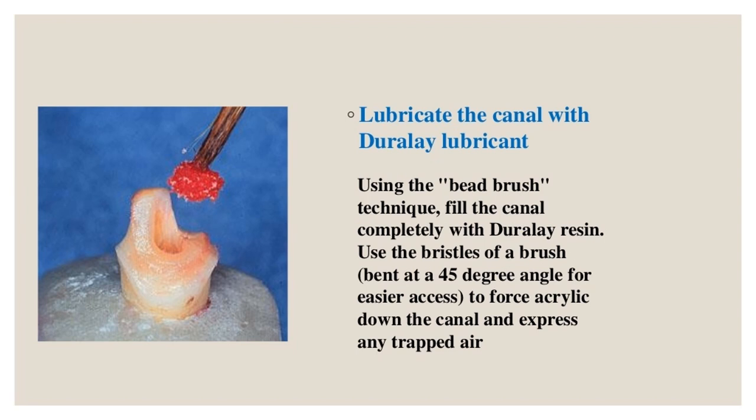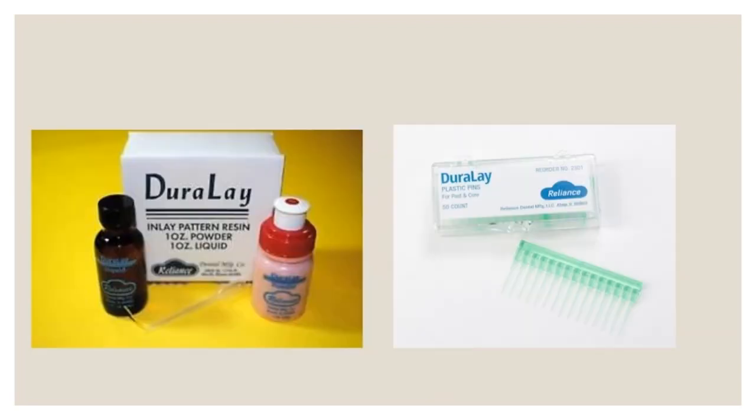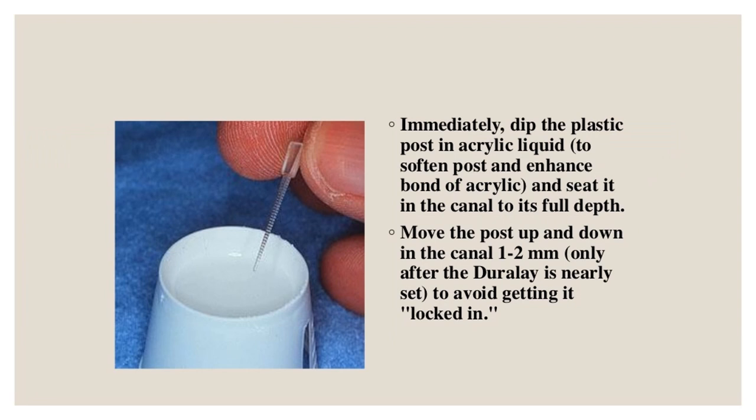Lubricate the canal with Duralay lubricant. Using the bead brush technique, fill the canal completely with Duralay resin; use a brush bent at a 45-degree angle to force acrylic down the canal and express any trapped air. Immediately dip the plastic post in acrylic liquid to soften the post and enhance bond of acrylic, then seat it in the canal to full depth. Move the post up and down 1 to 2 millimeters only after the Duralay is nearly set to avoid locking it in.